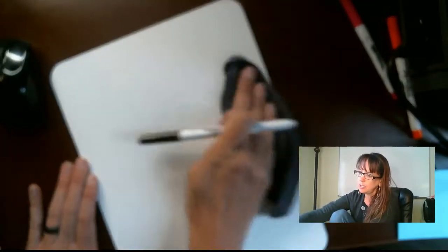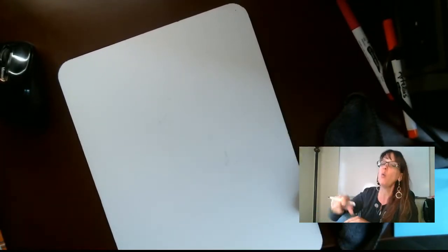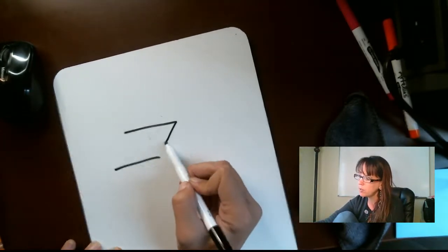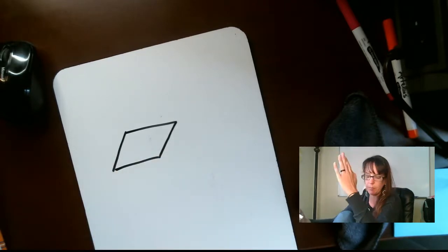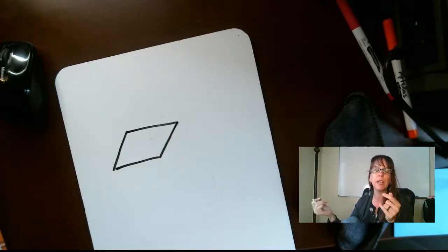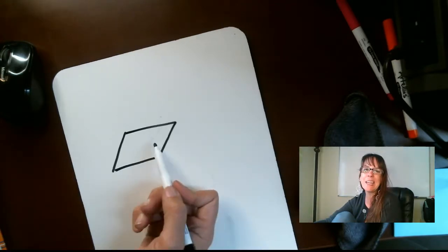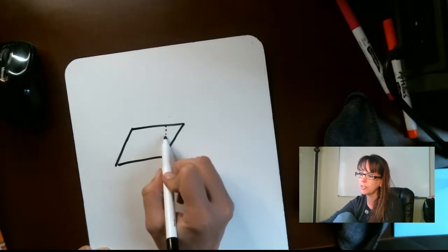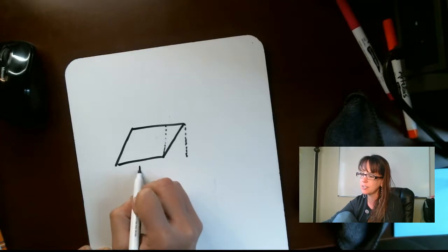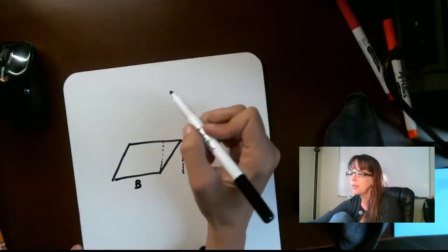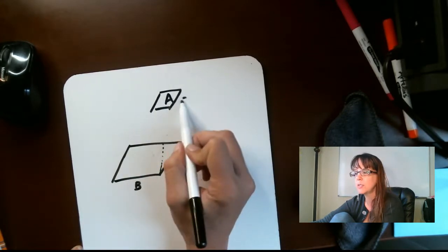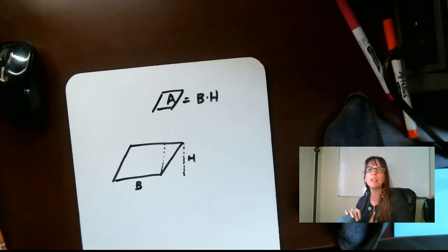One more area formula: the parallelogram. A parallelogram looks like a rectangle that got knocked sideways. The area is base times height — same as a rectangle — but you do not want to use the slanted sides for the height. Use the true perpendicular height. So the area of a parallelogram is base times height. Make sure to write that in your notes.